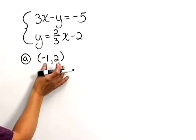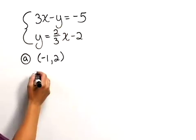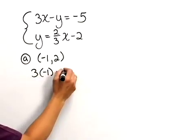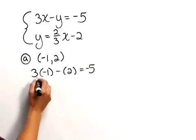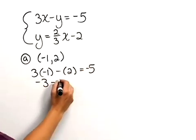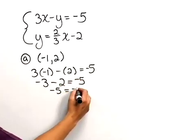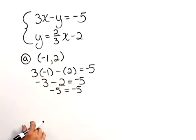So let's replace the x and the y here with negative 1 and 2. We have 3 times negative 1 minus 2 equaling negative 5. That gives us negative 3 minus 2 equaling negative 5, or negative 5 equals negative 5. This point works in the first equation.